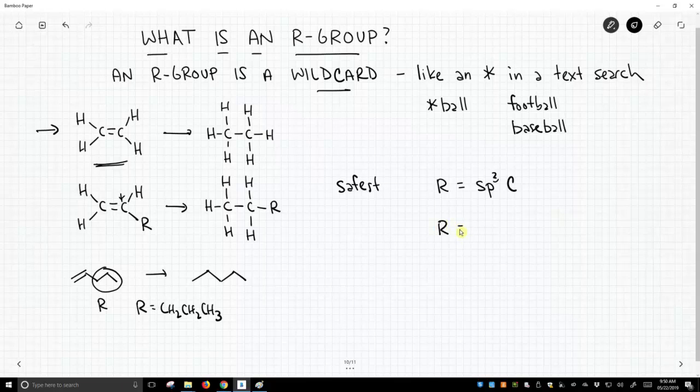What people normally do is R can be any carbon or a hydrogen. This is what most people assume when they see an R-group.